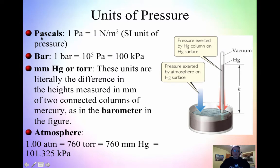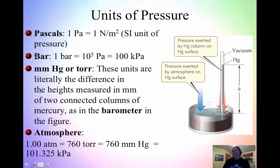For units of pressure, we have the Pascal — one Pascal is equal to one Newton per meter squared. This is the SI unit of pressure. Typically we don't use Pascals; we usually use kPa, kilopascals. The bar is becoming much more popular in today's chemistry world: one bar is equal to 100 kPa. So if you're ever asked to convert between bar and something else, one bar equals 100 kPa.